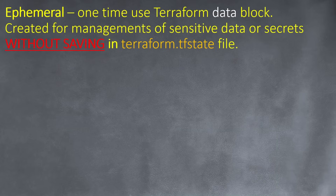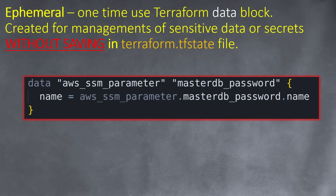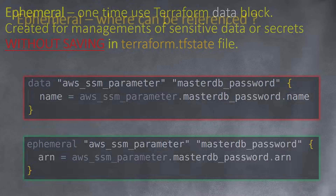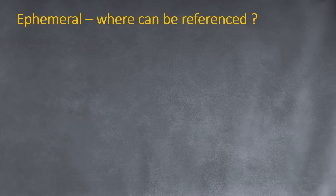The ephemeral data block also will not save anything in the state file. The old way uses a data block to read a password from SSM Parameter Store on AWS, but the results of that data read are saved in the state file. With an ephemeral data source, it will read the password but the results will not be saved in the Terraform state. So where can you reference and use it?